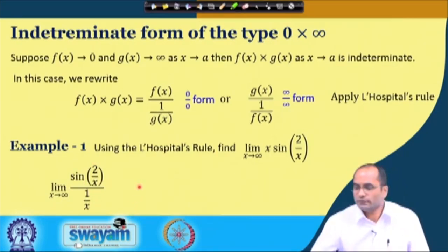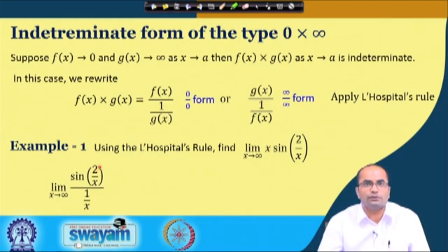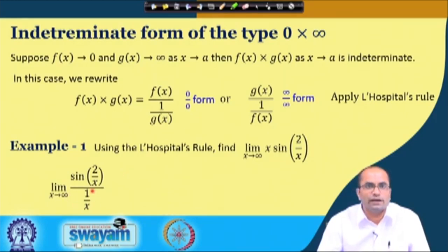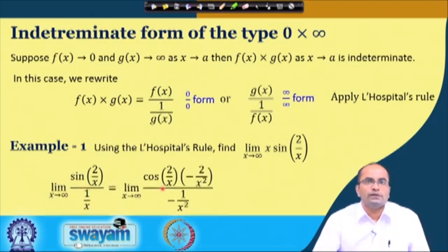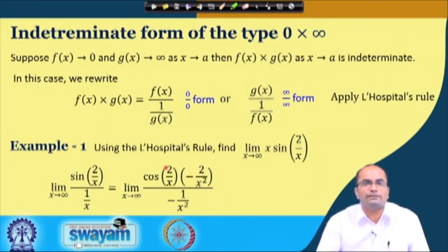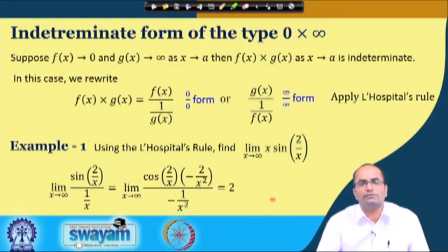Applying L'Hôpital's rule: the derivative of sin(2/x) is cos(2/x)·(−2/x²) and the derivative of 1/x is −1/x². The x² terms cancel, leaving the limit of 2·cos(2/x) as x goes to infinity. Since 2/x goes to 0 and cos(0) = 1, the limit is 2.